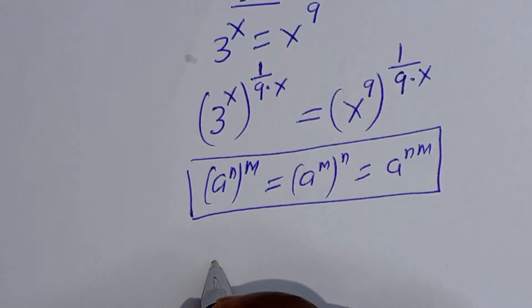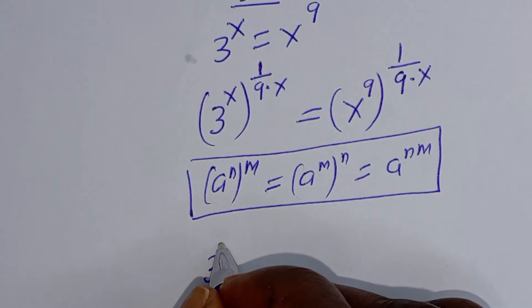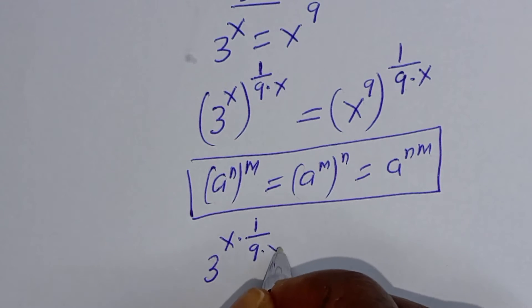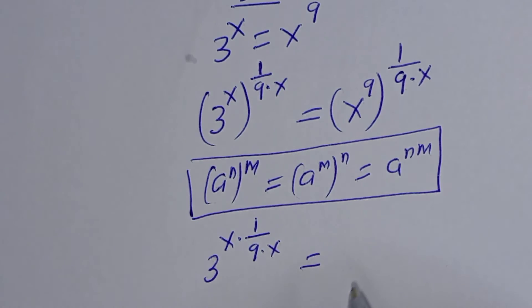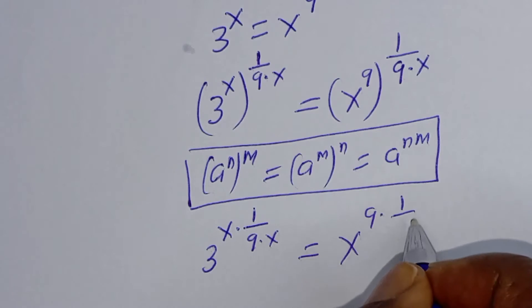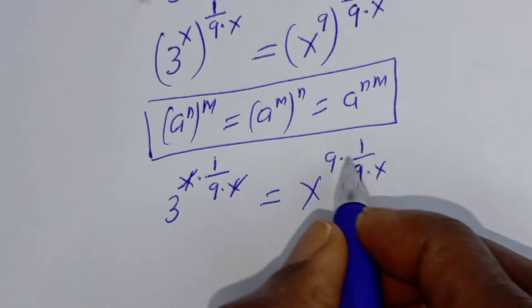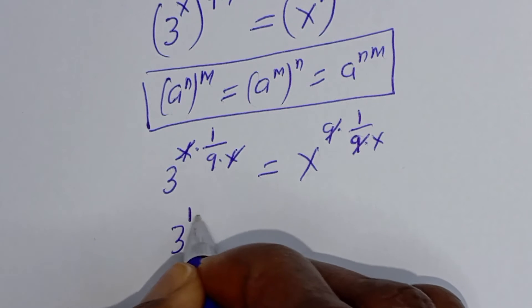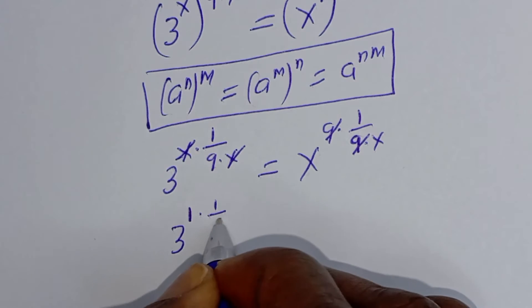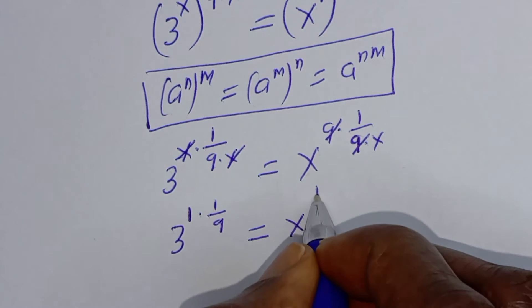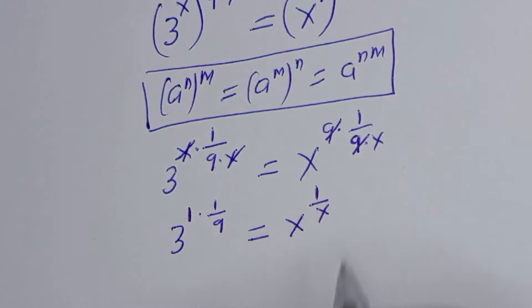So this can be written as t raised to power s multiplied by 1 over 9 multiplied by x, is equal to x raised to power 9 multiplied by 1 over 9 multiplied by x. This will cancel, and the left hand side becomes t raised to power 1 multiplied by 1 over 9, equal to the right hand side s raised to power 1 over x.